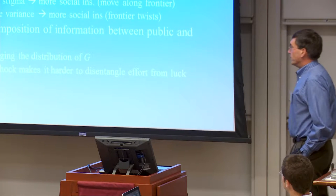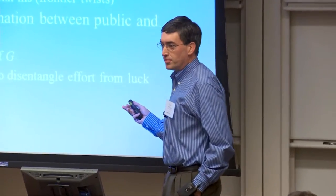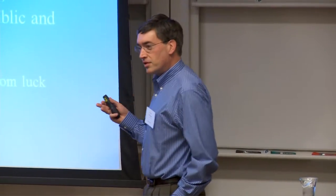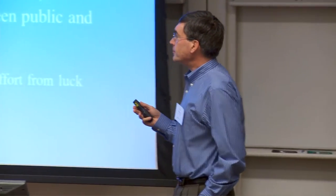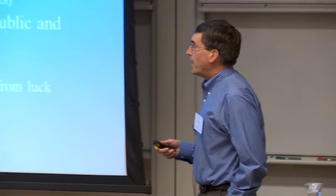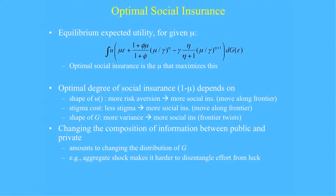If you want to think about the optimal degree of social insurance, one way is to set it up like an optimal tax problem. First, work out the indirect utility function where the individual is optimized. Then, taking the individual's decision rules, optimize the policy parameters against those. On the top is the indirect utility function for the individuals. Mu would be the policy parameter that could be chosen to maximize the expected indirect utility.